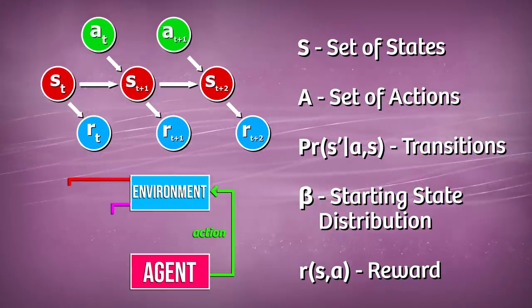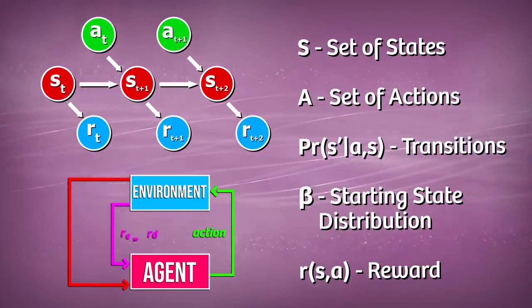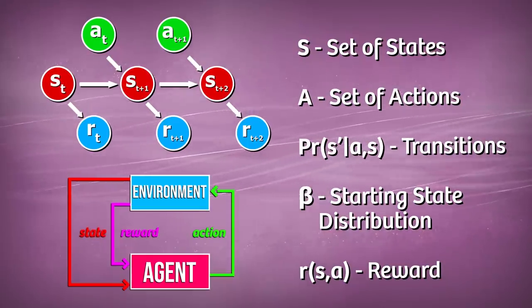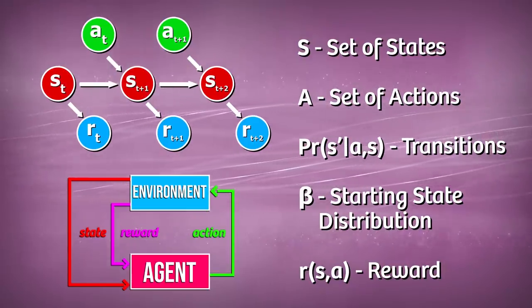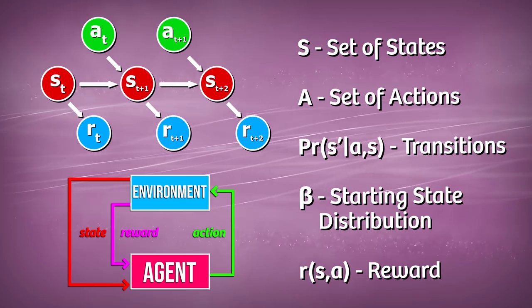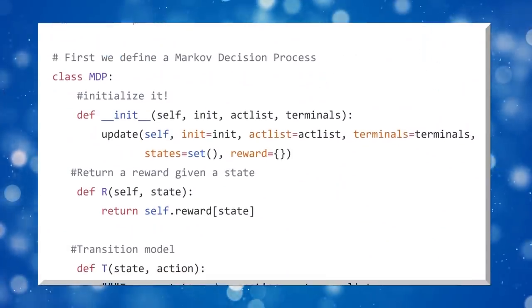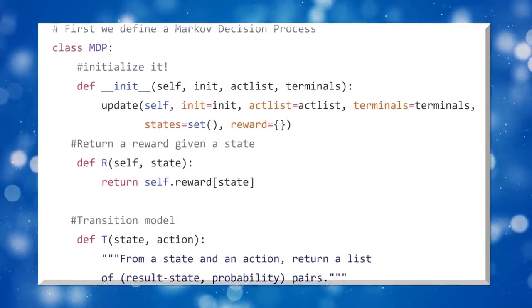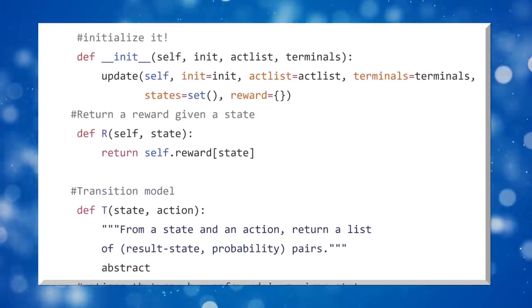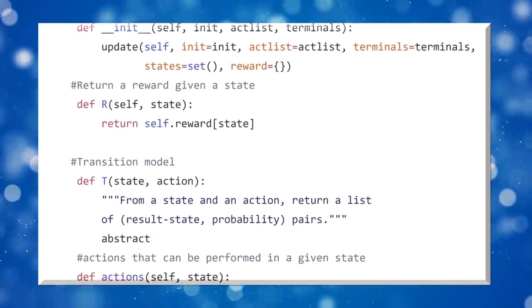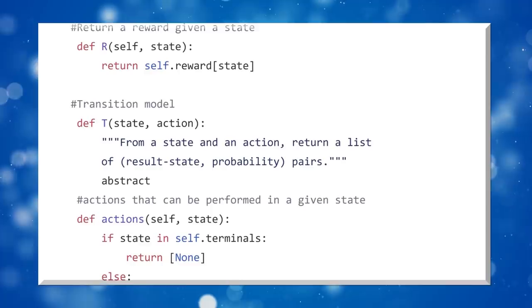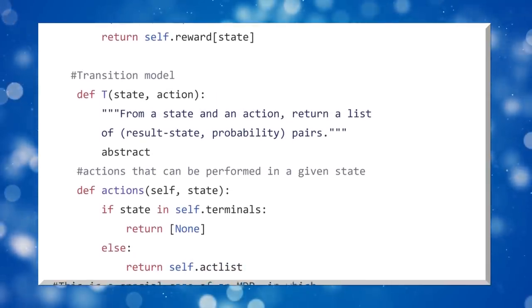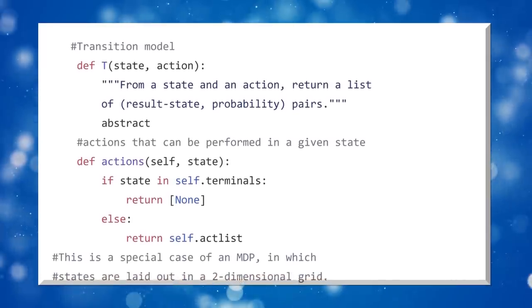And since we have a reward function, we can conclude that some states are more desirable than others because when the agent moves to these states, it receives a high reward. The opposite is also true. There are states that should be avoided, because when the agent moves there, it receives a negative reward. The problem then is that the agent has to maximize the reward by avoiding states which return negative values and choosing the one which returns positive values. The solution is to find a policy which selects the action with the highest reward. Agents can try different policies, but only one can be considered an optimal policy, which gives us the best utility.